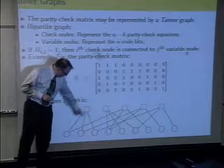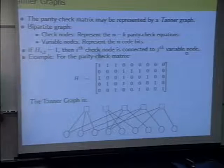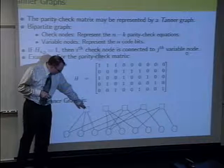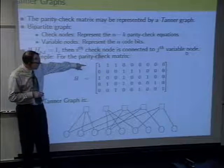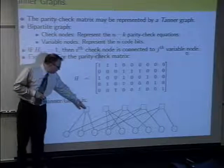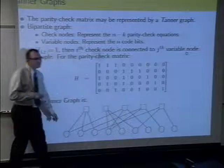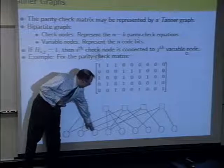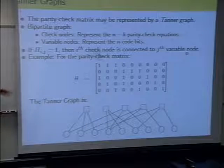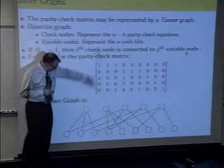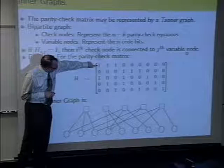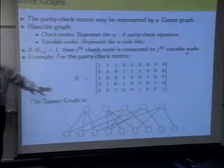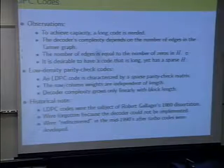We can also describe a code graphically using a Tanner graph, named after Mike Tanner. It's a bipartite graph with two types of nodes: check nodes (squares) and variable nodes (circles). Each check node corresponds to a parity check equation — one row of H. Each variable node corresponds to a column of H. A check node is connected to a variable node if there's a one in the corresponding H matrix location. So this Tanner graph is just another way to represent the parity check matrix.